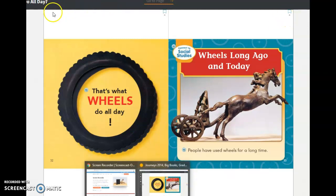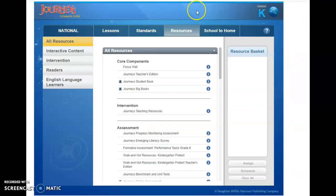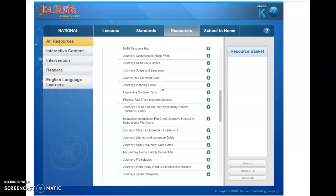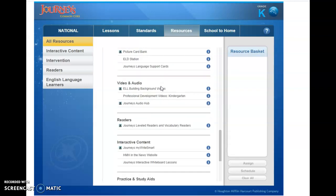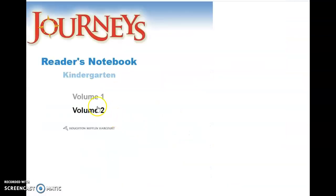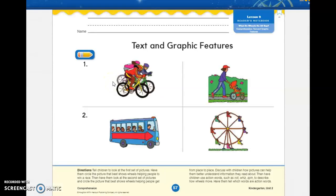All right, I'm going to pull up your workbook page to show you. All right, let me find your page and I'll show it to you in color. Yours that you've got at home is in black and white. All right, and here it is boys and girls. The directions say look at the first set of pictures.